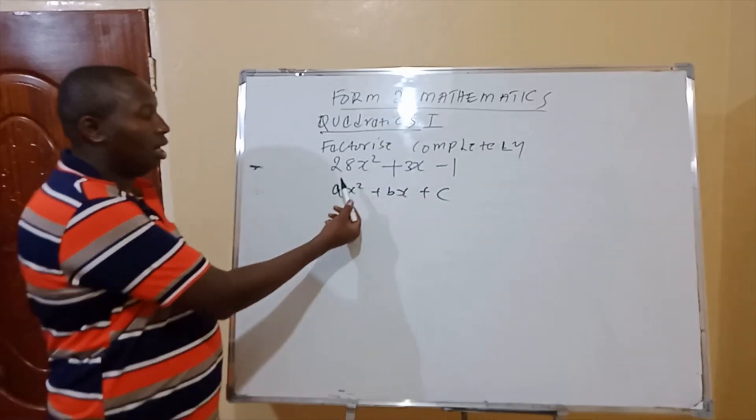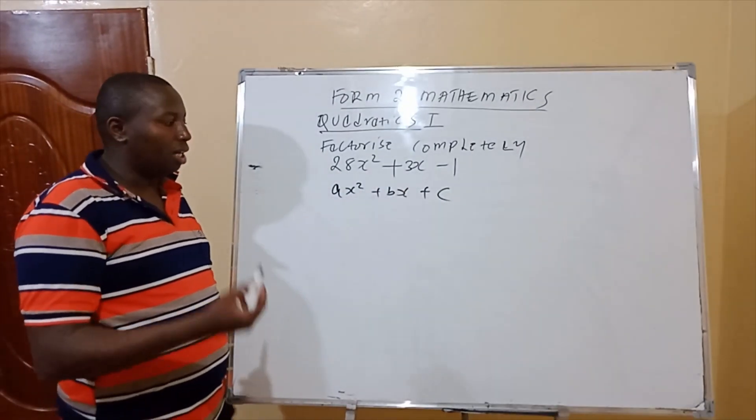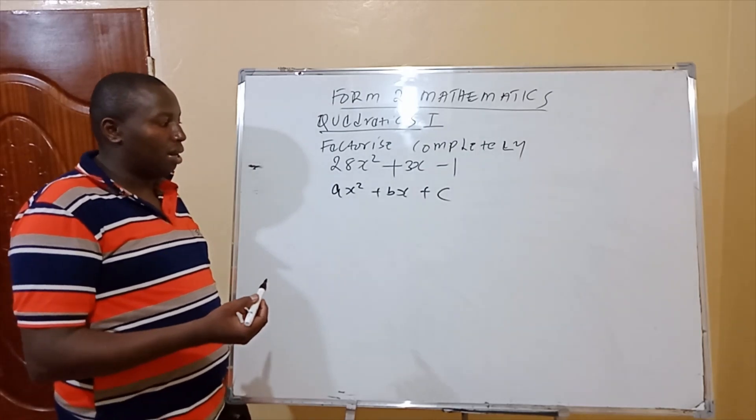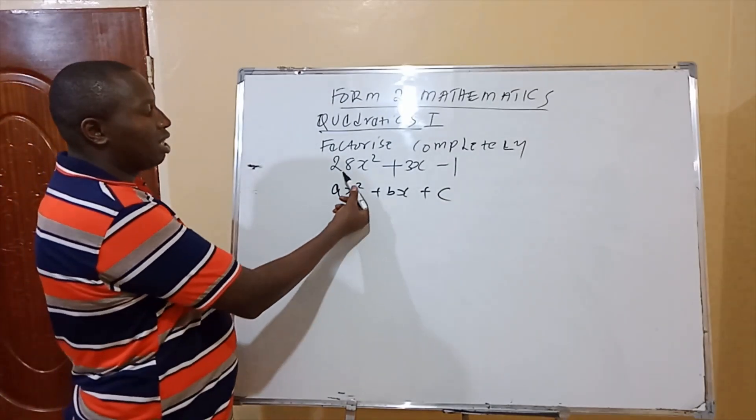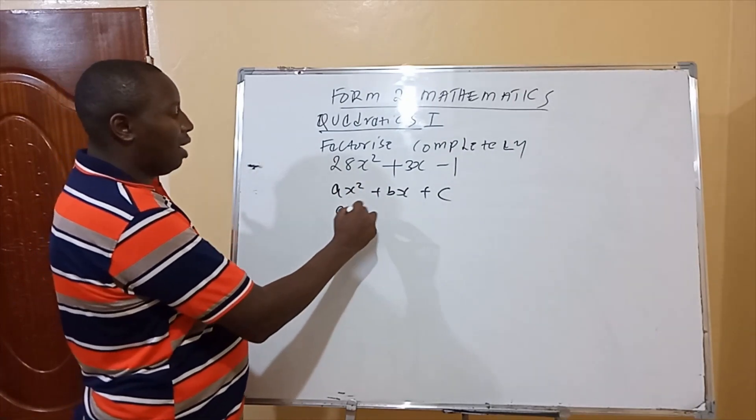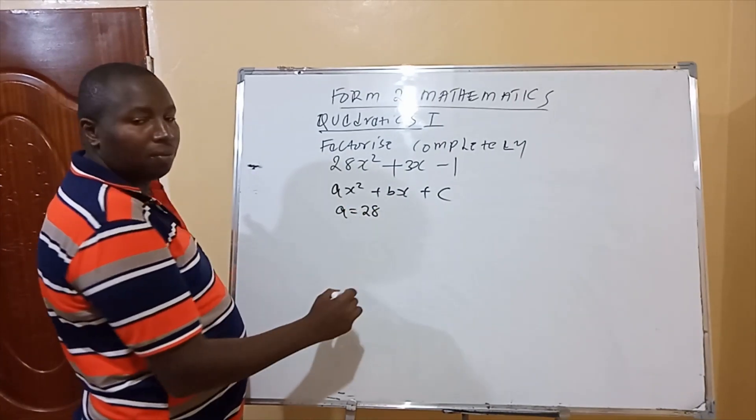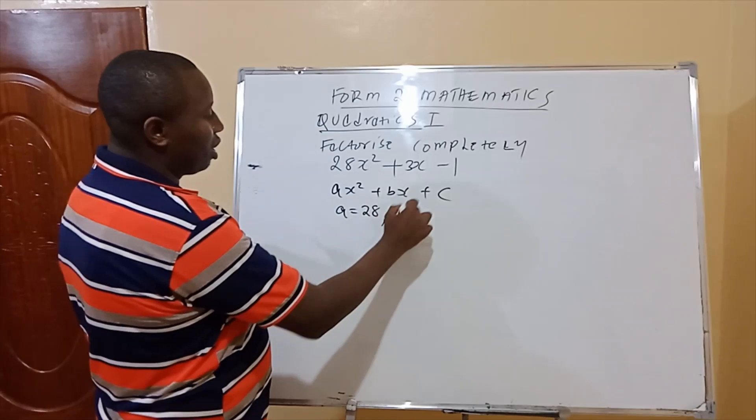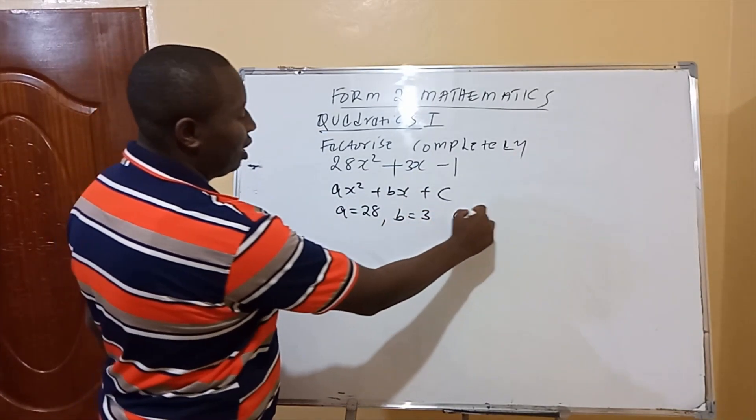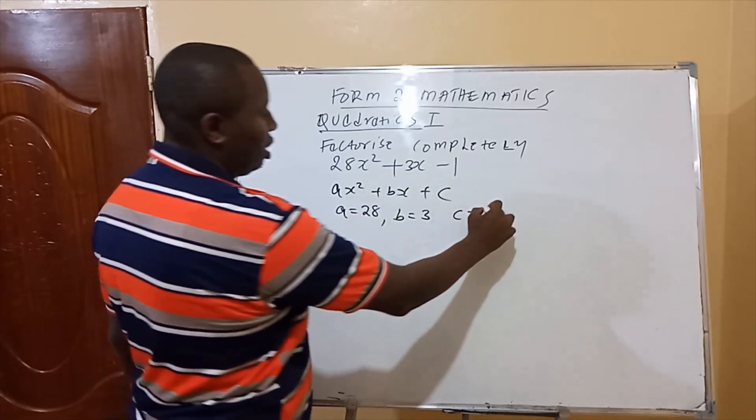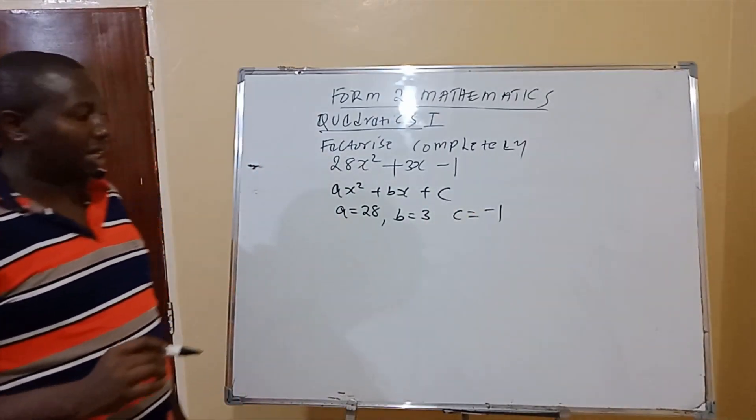So when you are given this kind of expression to factorize, then you are supposed to identify what is your a. a is the coefficient of x squared. So our a in this case is 28. Our b is the coefficient of x, where b is 3, and c, which is the constant, is negative 1.